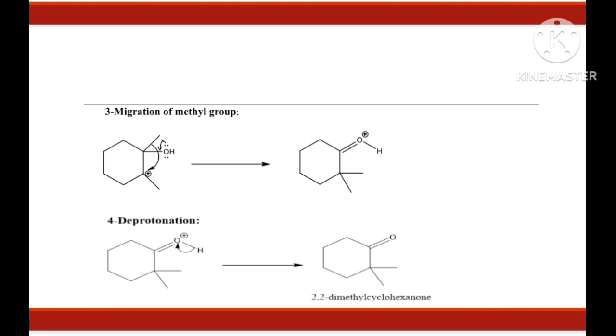Third step is migration. Migration of methyl group from the adjacent carbon of the carbocation will occur and main driving force of this migration is push and pull mechanism. Fourth step is deprotonation. Here, oxygen atom again has a positive charge so it is highly unstable and deprotonation occurs and we will get our required molecule 2,2-dimethylcyclohexanone.